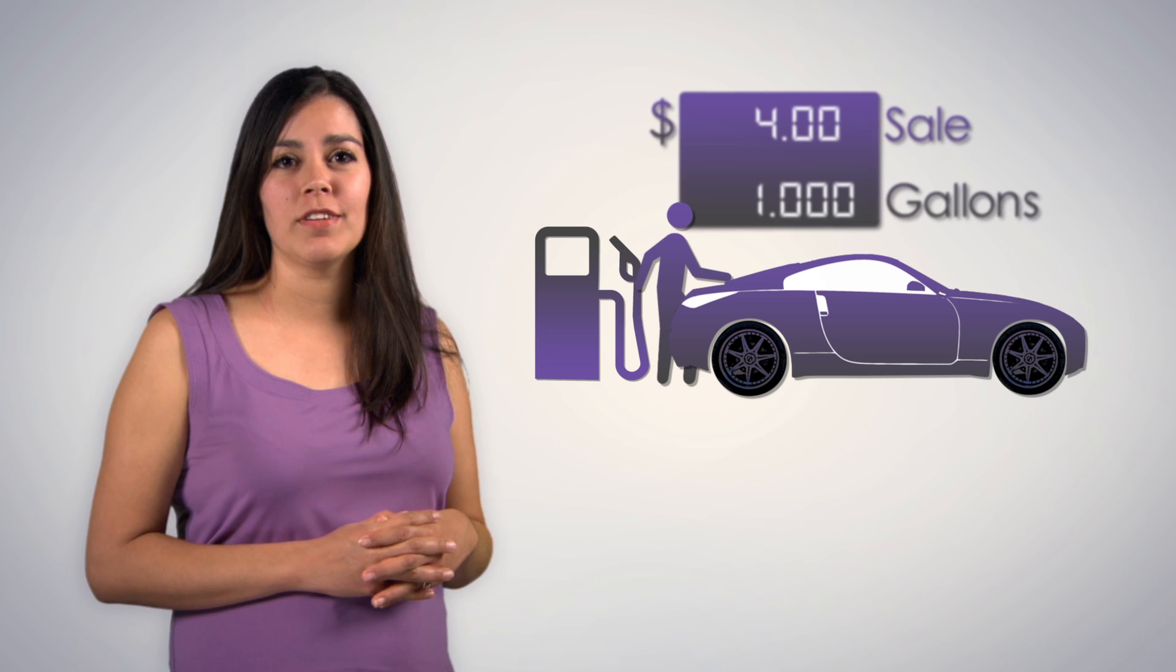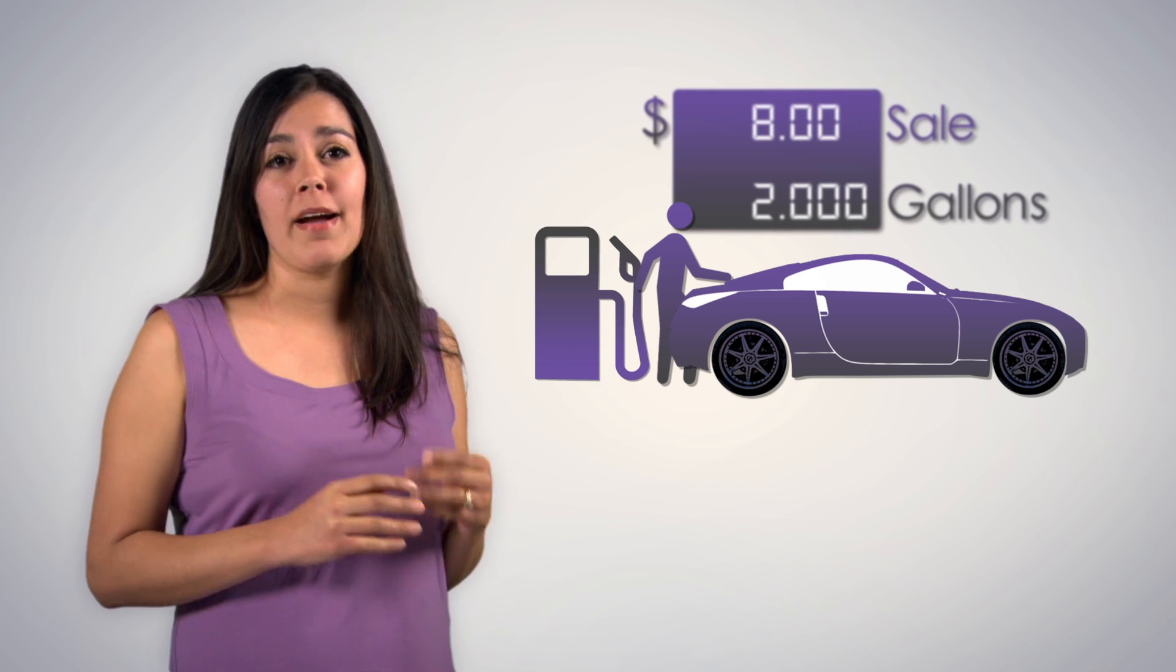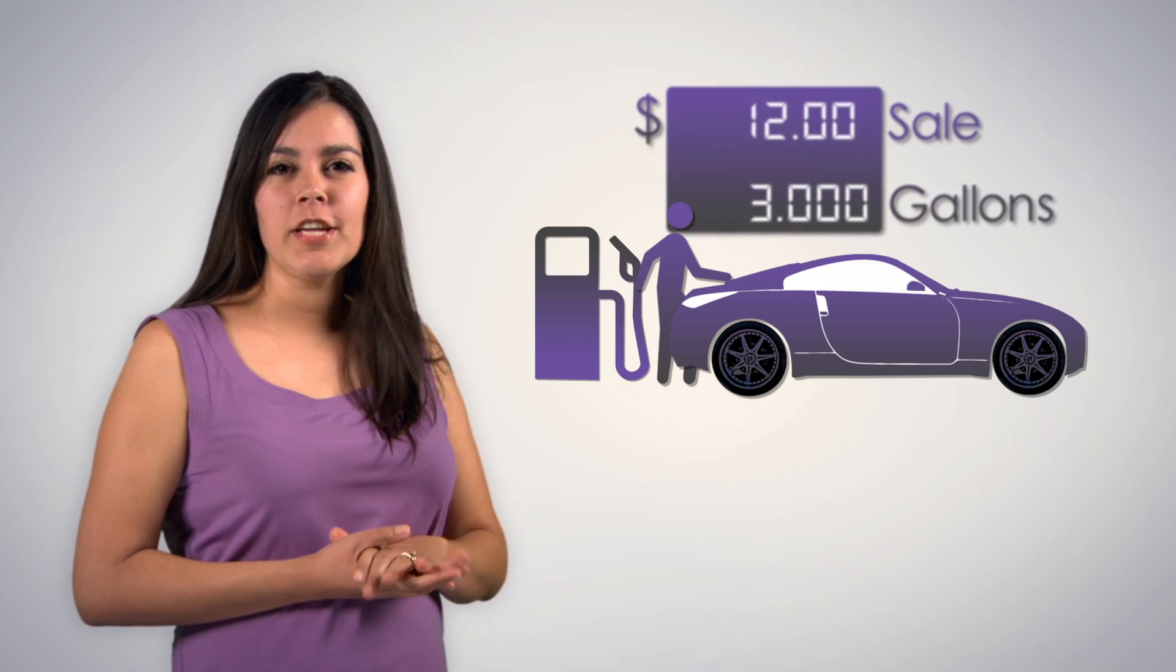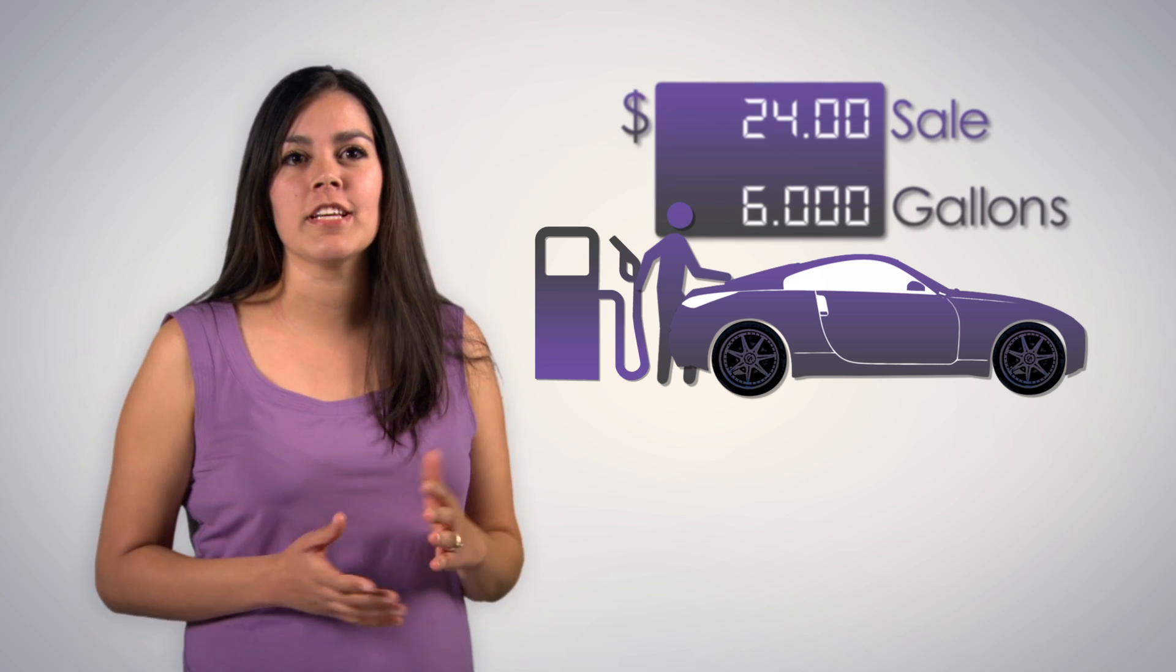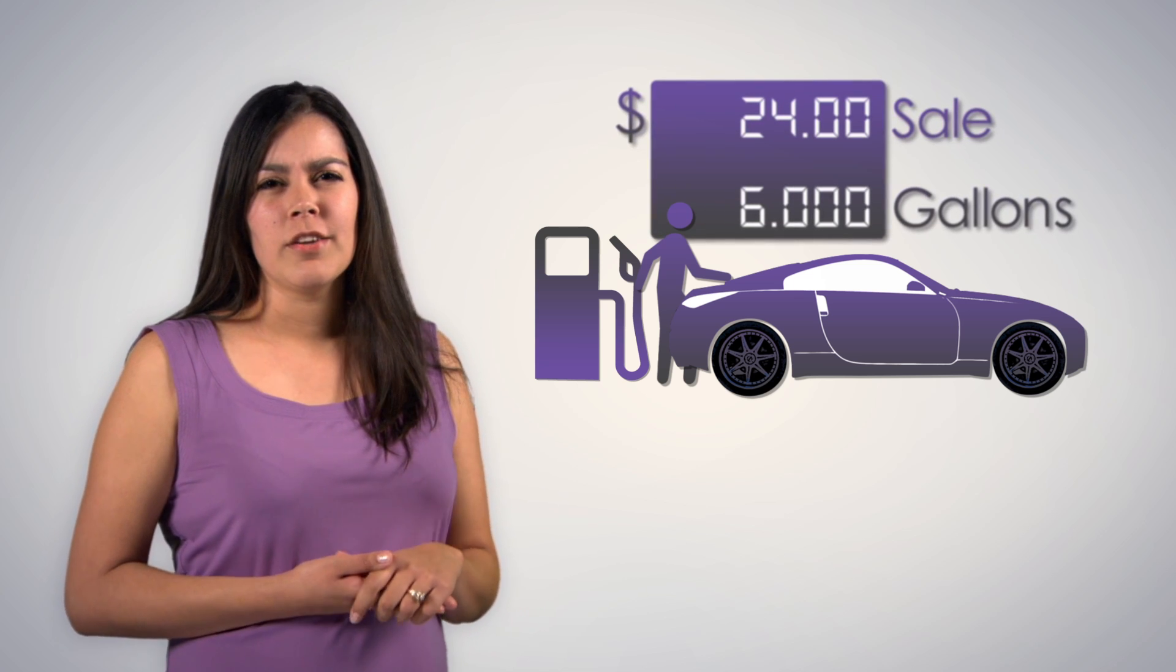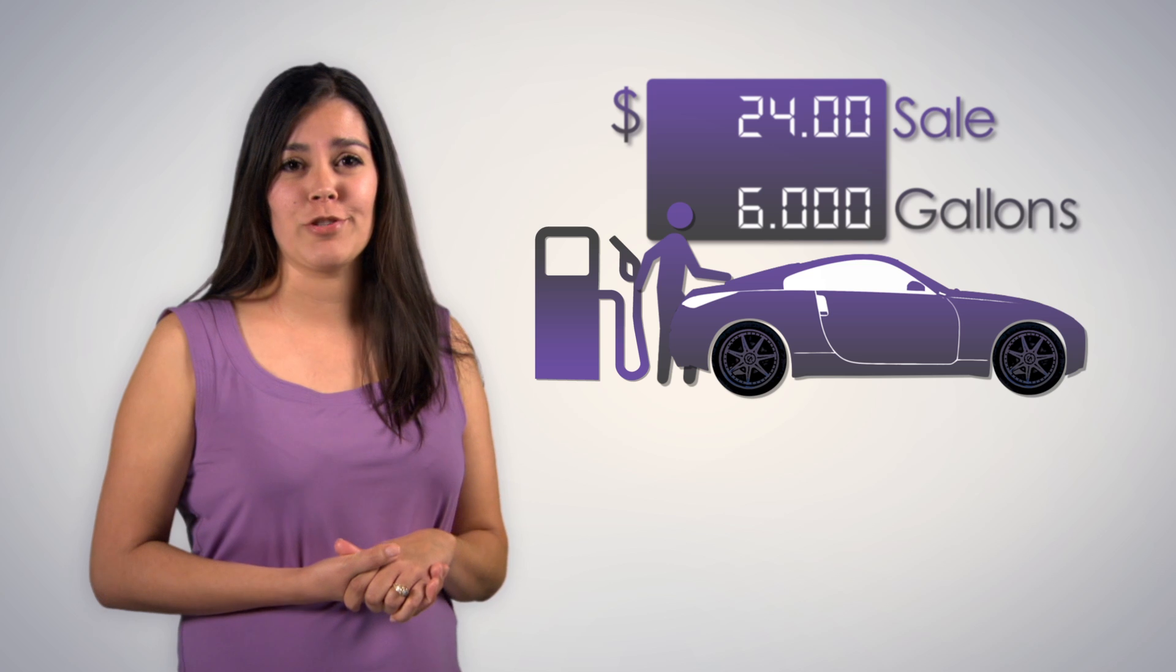Another example of a linear function involves buying gas for that car. For each gallon of gas you pump, a fixed amount, say $4, is added to your total bill. You are paying $4 per gallon. Ouch.